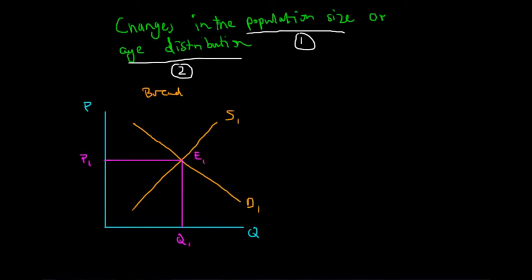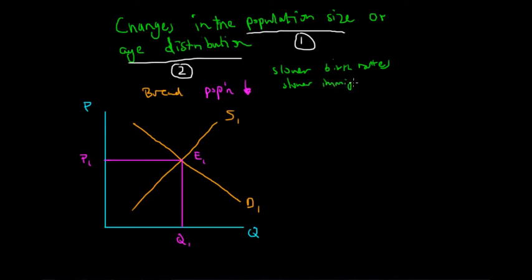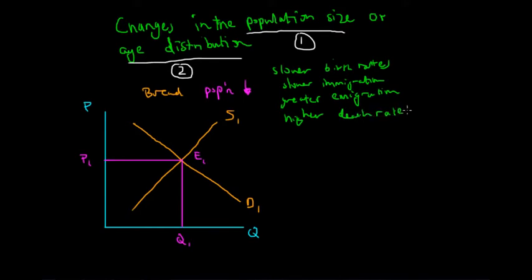Assuming that the population has decreased for whatever reason — this can be due to slower birth rates, slower immigration rates, or greater emigration (moving out of the country), or possibly high death rates — all of these can affect population growth. So the population size has decreased for whatever reason.